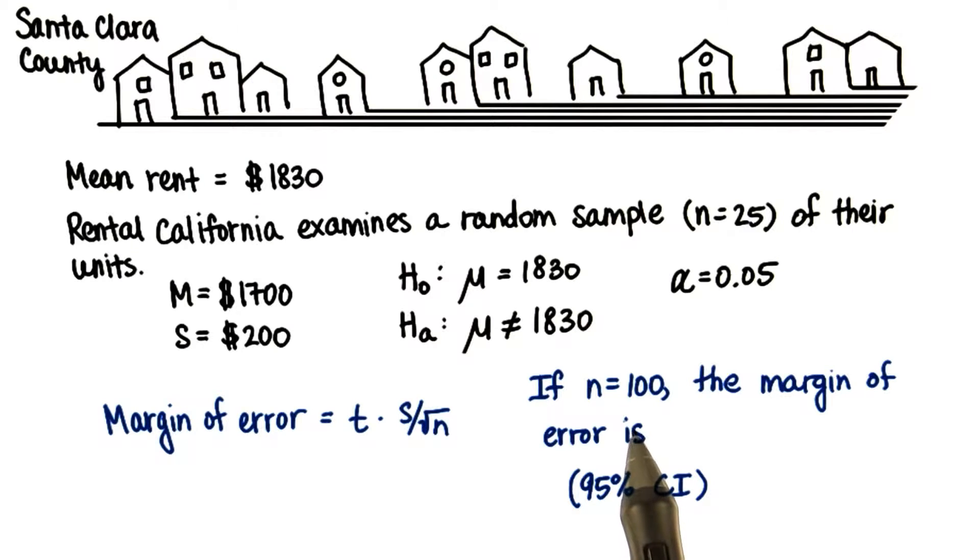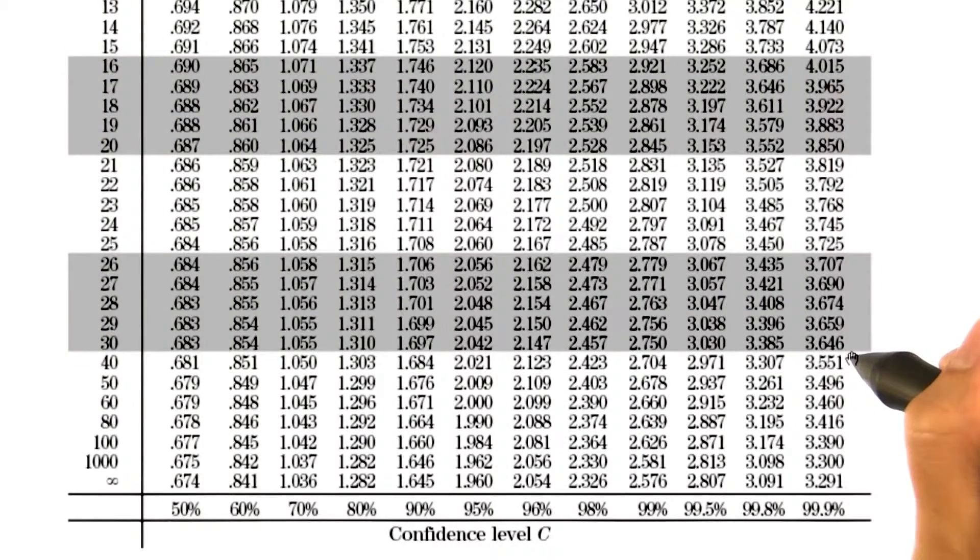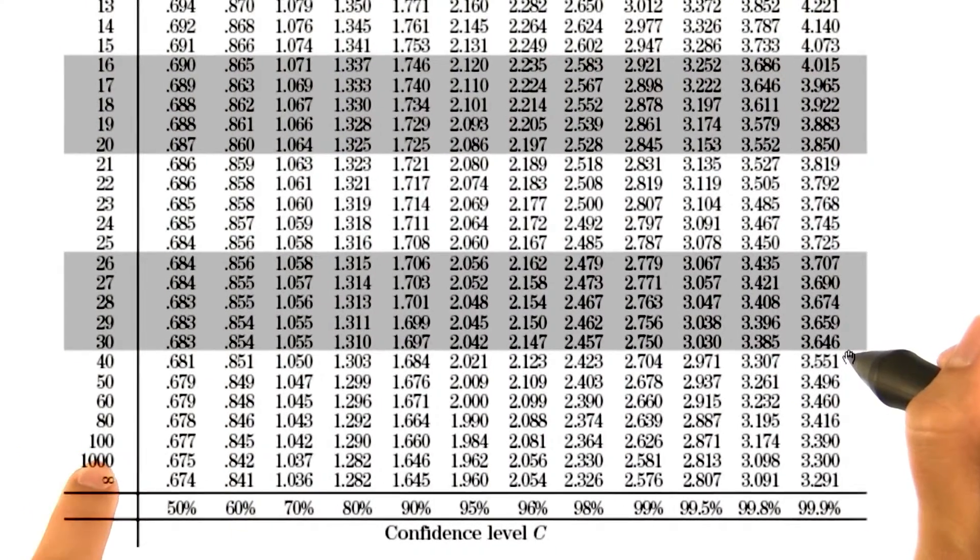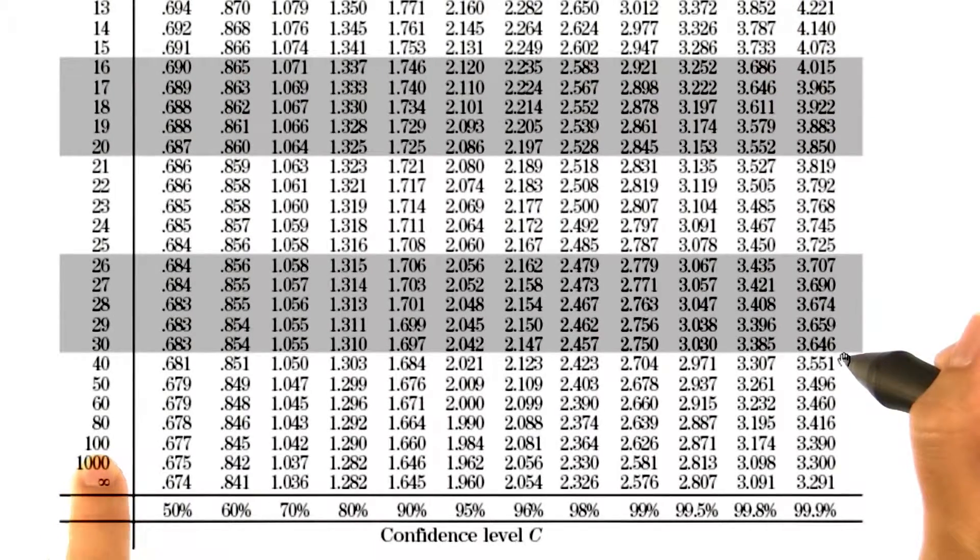If our sample size is 100, that means we now have 99 degrees of freedom instead of 24. And if we look at our t-table, we see that the closest degrees of freedom to 99 is 100, so we'll just use that one.